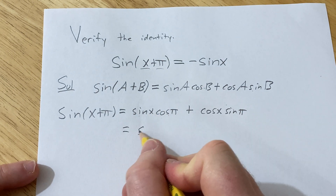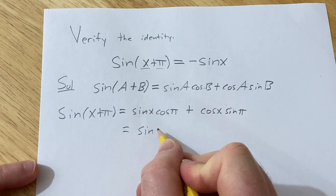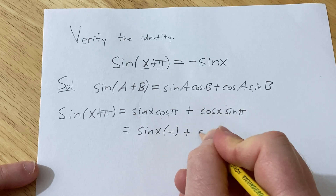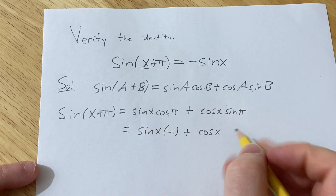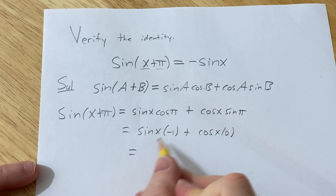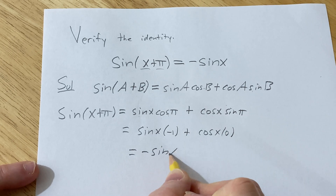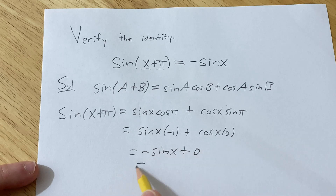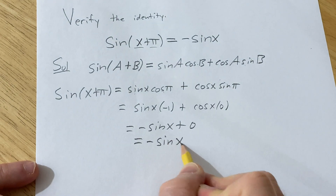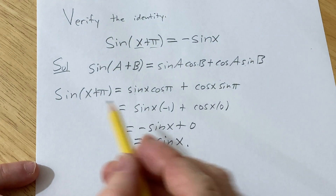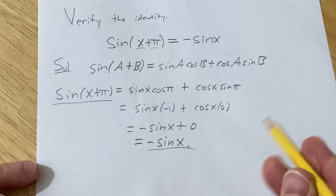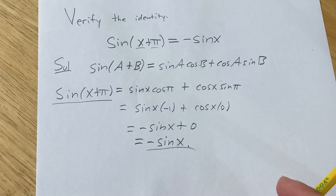Cosine of pi is negative 1, so this is sine x times negative 1 plus cosine x times sine pi, and sine of pi is zero. So this simplifies to negative sine x plus zero, which equals negative sine x. We started with sine of x plus pi and ended up with negative sine x. Good luck.